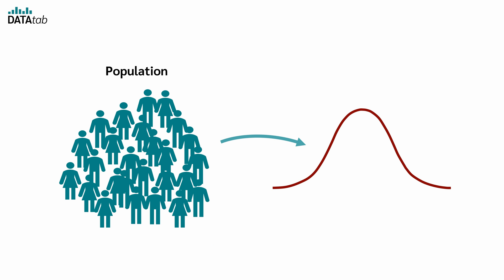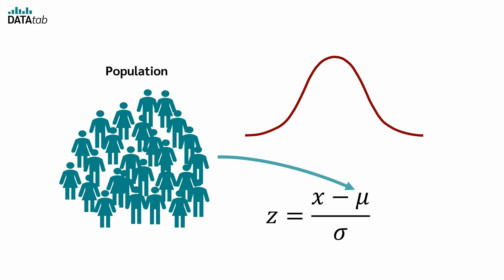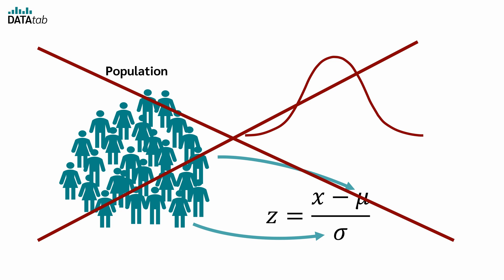The z-distribution assumes that the underlying population is normally distributed and that the mean μ and standard deviation σ of the population are known. However, since in practice you rarely have data of the whole population and the mean and standard deviation are usually not known, this assumption is often not met.